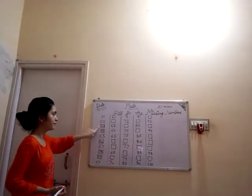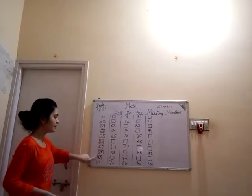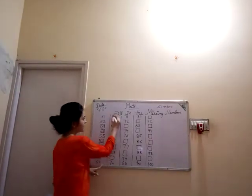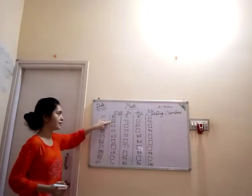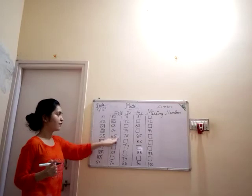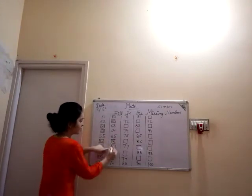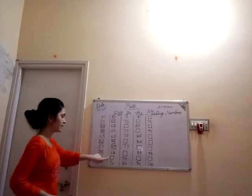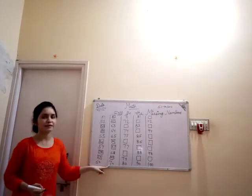51, 52, 53, 54, 55, 56, 57, 58, 59. And 59 ke bad? 6, 0, 60. 60 ke bad kya atar? 6, 1, 61. 61 ke bad? 6, 2, 62. 62 ke bad? 6, 3, 63. 63 ke bad? 6, 4, 64. 6, 5, 65. 65 ke bad? 6, 6, 66. 66 ke bad atar? 6, 7, 67. 67 ke bad? 6, 8, 68. 68 ke bad? 6, 9, 69. And 69 ke bad? 7, 0, 70.